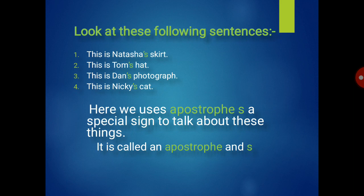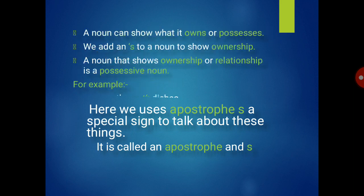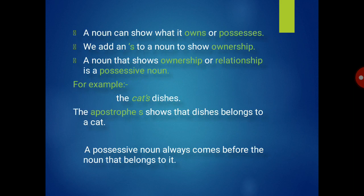A special sign is used — that is called apostrophe s. A noun can show what it owns or possesses. We add an apostrophe s to a noun to show ownership — the things that belong to a certain person. So when we are adding apostrophe s, it means it is showing the ownership.